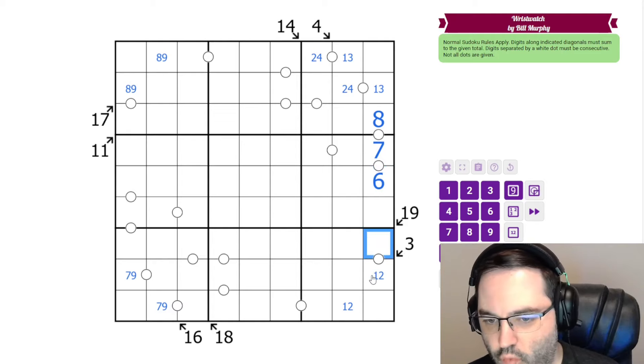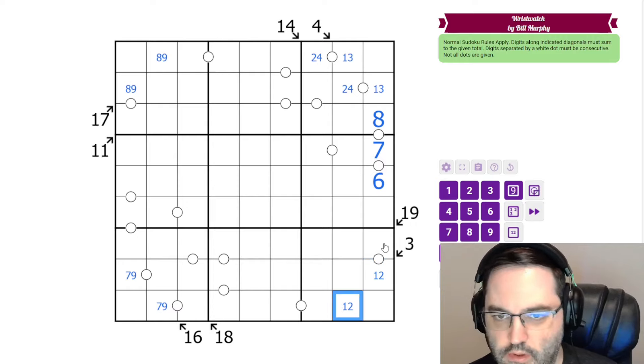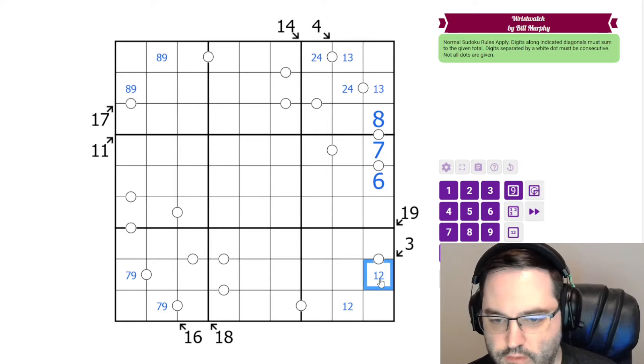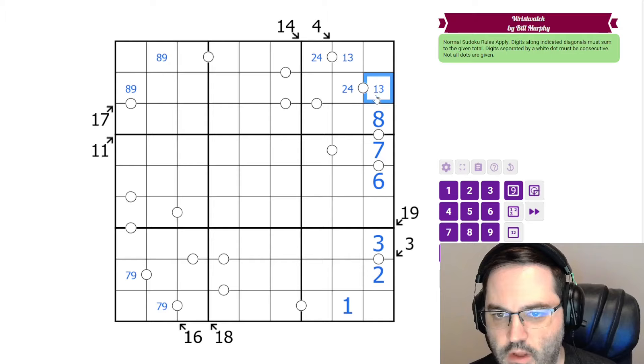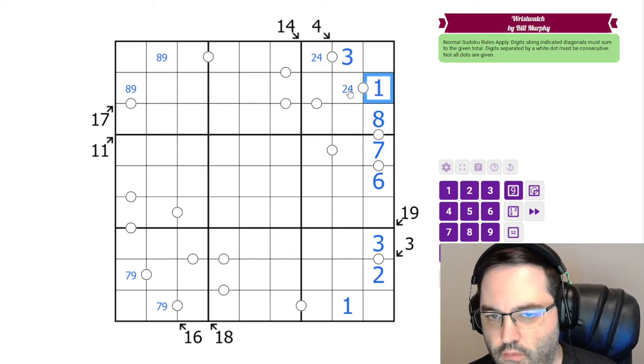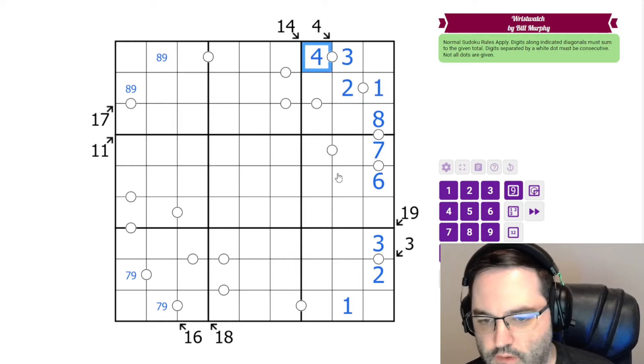This has to be consecutive with 1 or 2. But if this were 1, we would need a 2 here, and that's going to break the 2 we know we need on the 3 clue. So this must be 2, 3 like this, and this is 1. That makes this 1 and 3. The 1 has to go next to 2, so that's resolved.